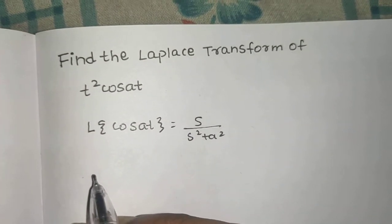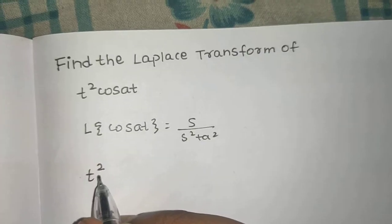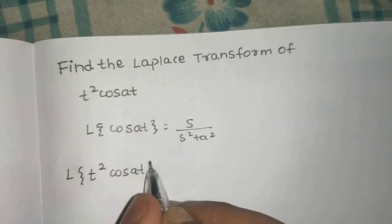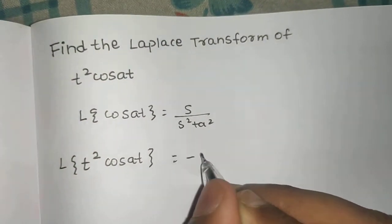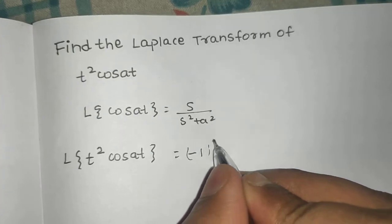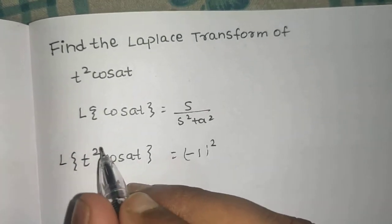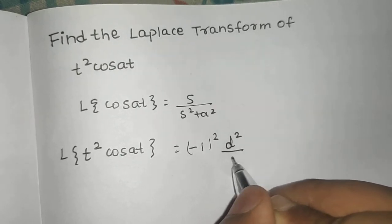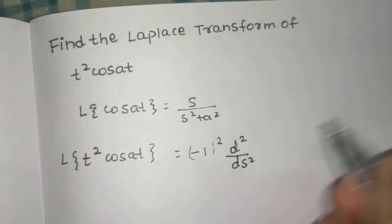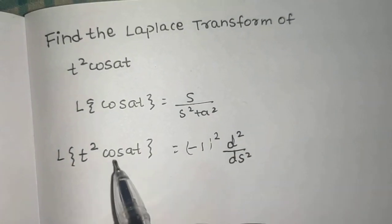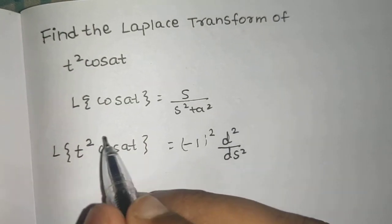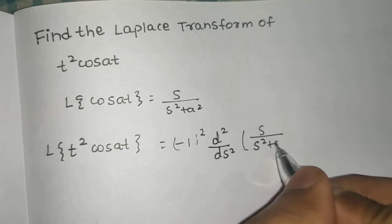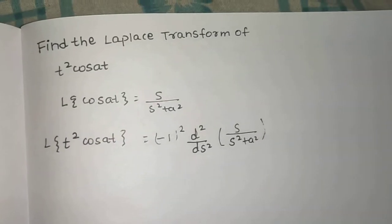We know the multiplication by t property: if we multiply by t^n, then the Laplace of t² cos(at) will be (-1)^n times the nth derivative, where n=2, so it is the second order derivative — d²/ds² — of whatever you got for the Laplace transform of what you are multiplying with t². Here that is s/(s²+a²), so we differentiate this two times.